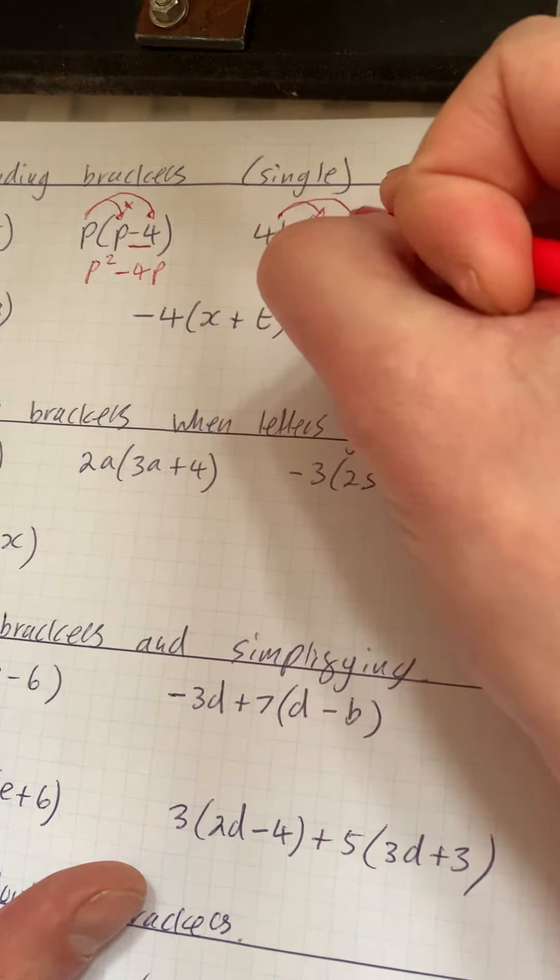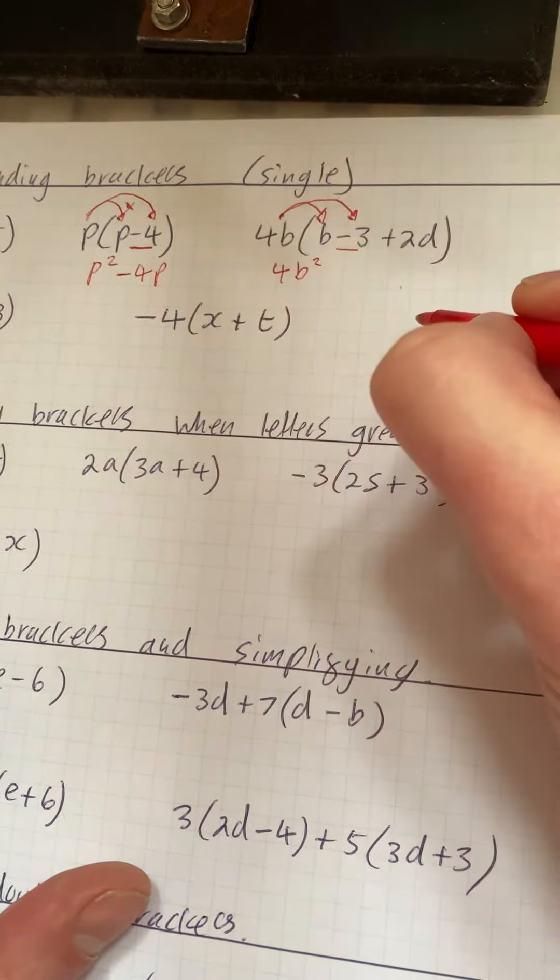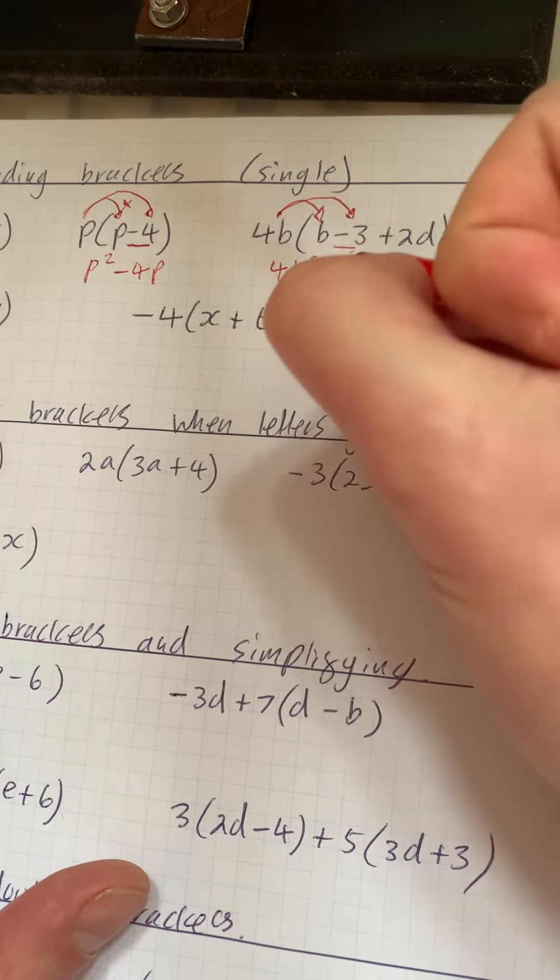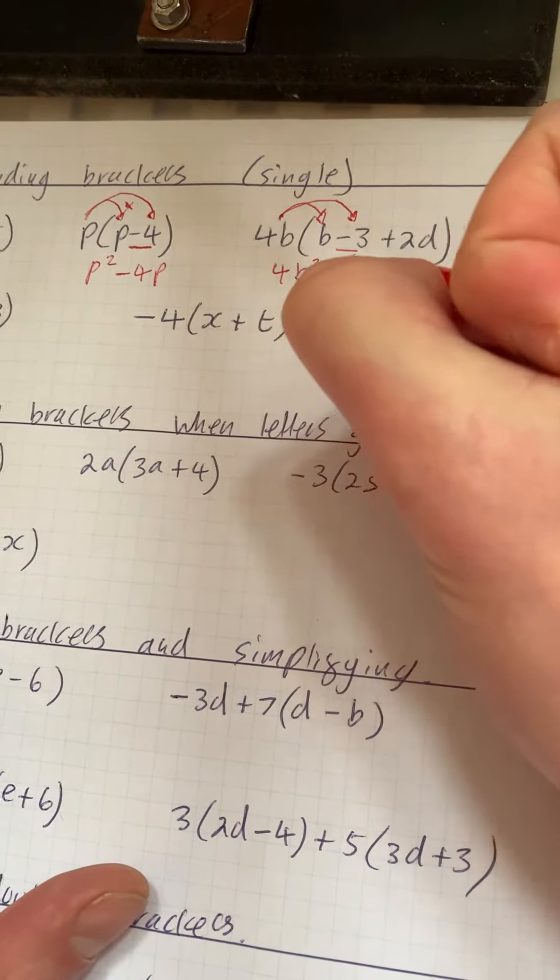We then do 4b, but this time we're times in by minus 3. Now 4 times 3 is 12, but because it's minus, it's going to be minus 12b.